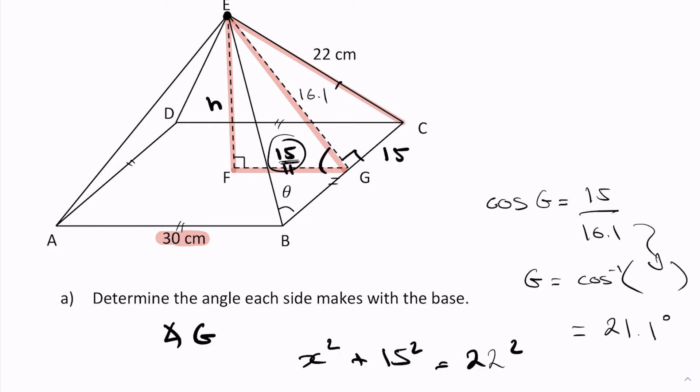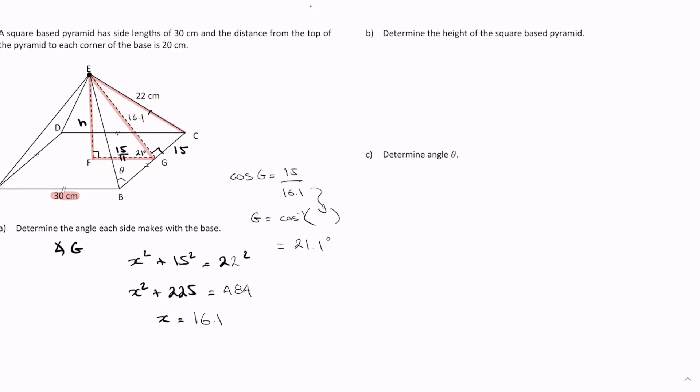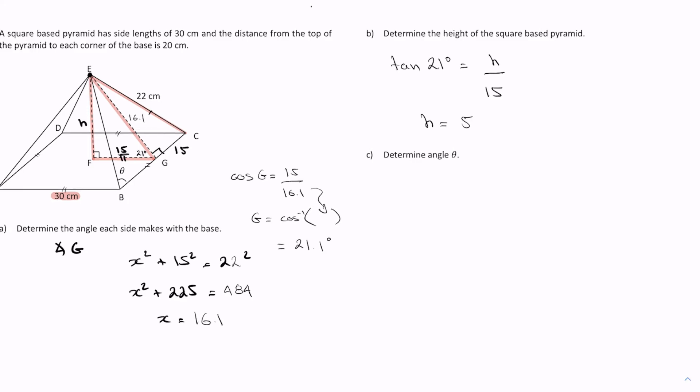I'm going to write 21 degrees. The second part is find the height of the square base pyramid. That's pretty easy because now I can just use tan of 21 equals h over 15. When you do the math, I get 5.75, or I'll just say approximately 5.8 centimeters.